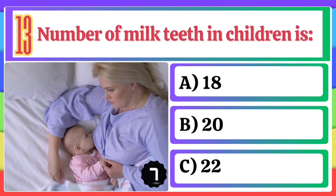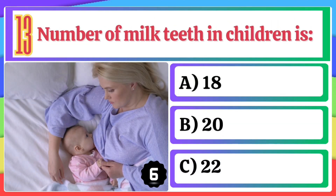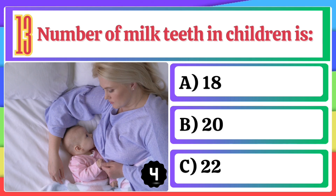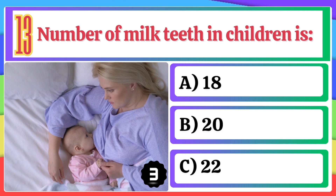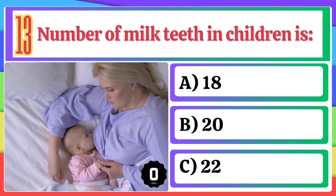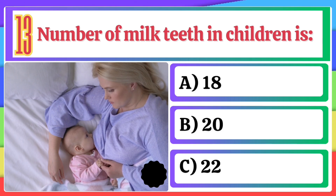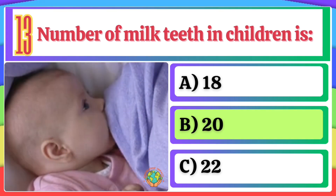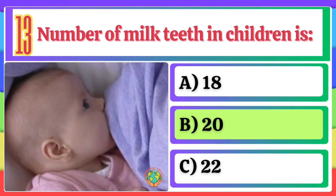Number of milk teeth in children is: A) 18, B) 20, C) 22. The correct option is B, 20.